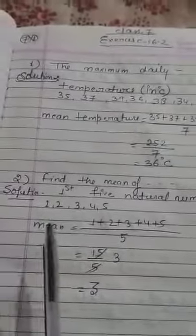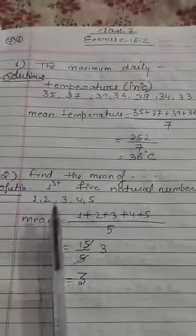Question number second is, find the mean of the first 5 natural numbers. So what is the first 5 natural numbers? First, we have to know this: 1, 2, 3, 4, 5.